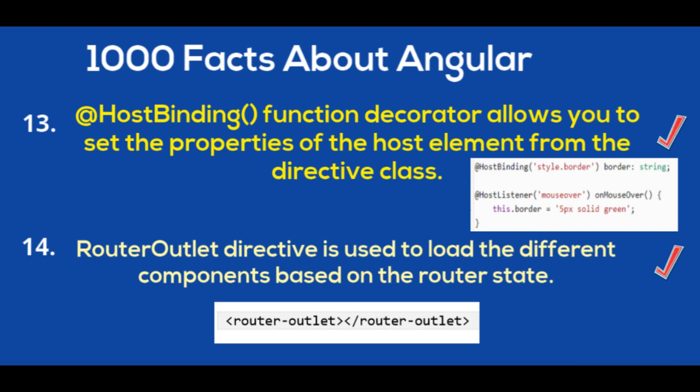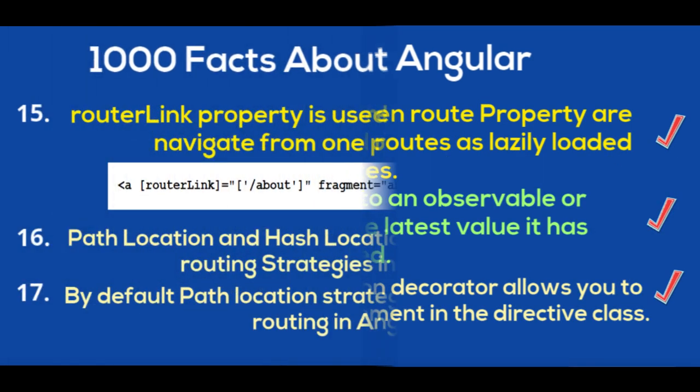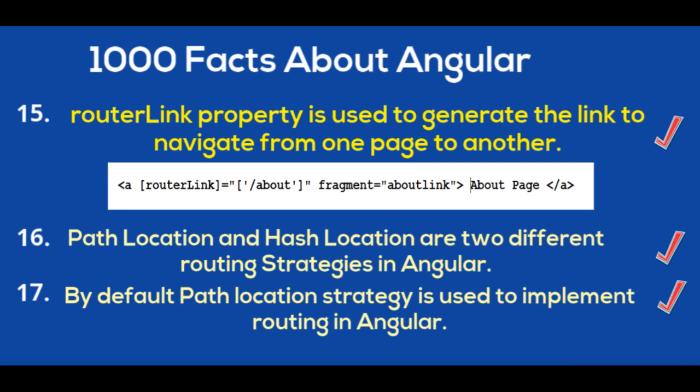RouterOutlet directive is used to load different components based on the router state. RouterLink property is used to generate the link to navigate from one page to another page.